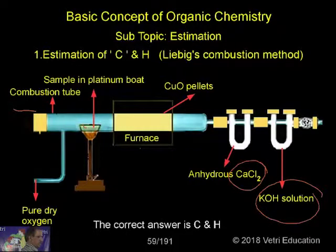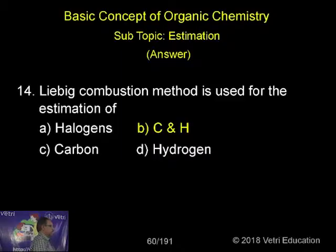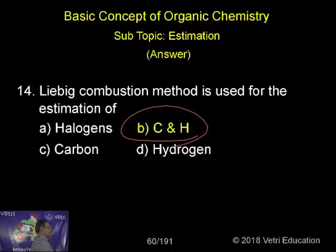Calcium hydroxide is used to absorb water, and potassium hydroxide is used to absorb carbon dioxide. From the difference in weight, we can calculate and estimate the percentages of carbon and hydrogen by Liebig's combustion method.